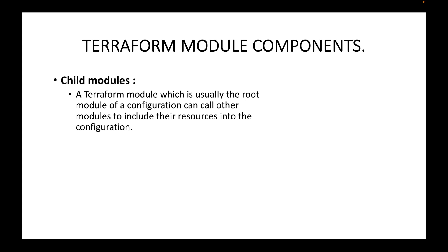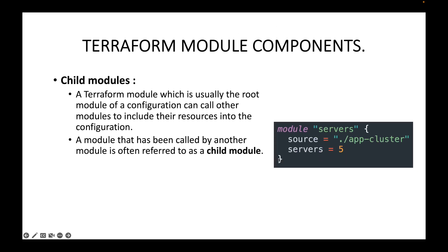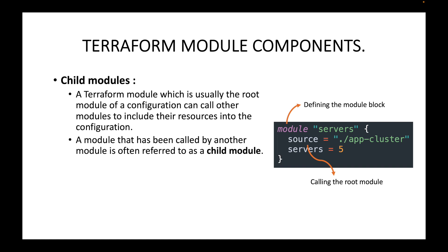The child module is basically used to call the root module. A Terraform module — usually the root module of a configuration — can call other modules to include their resources into the configuration. We define a module block using the module keyword with a local name, and then use the source argument to specify the root module we want to use to create the resources.